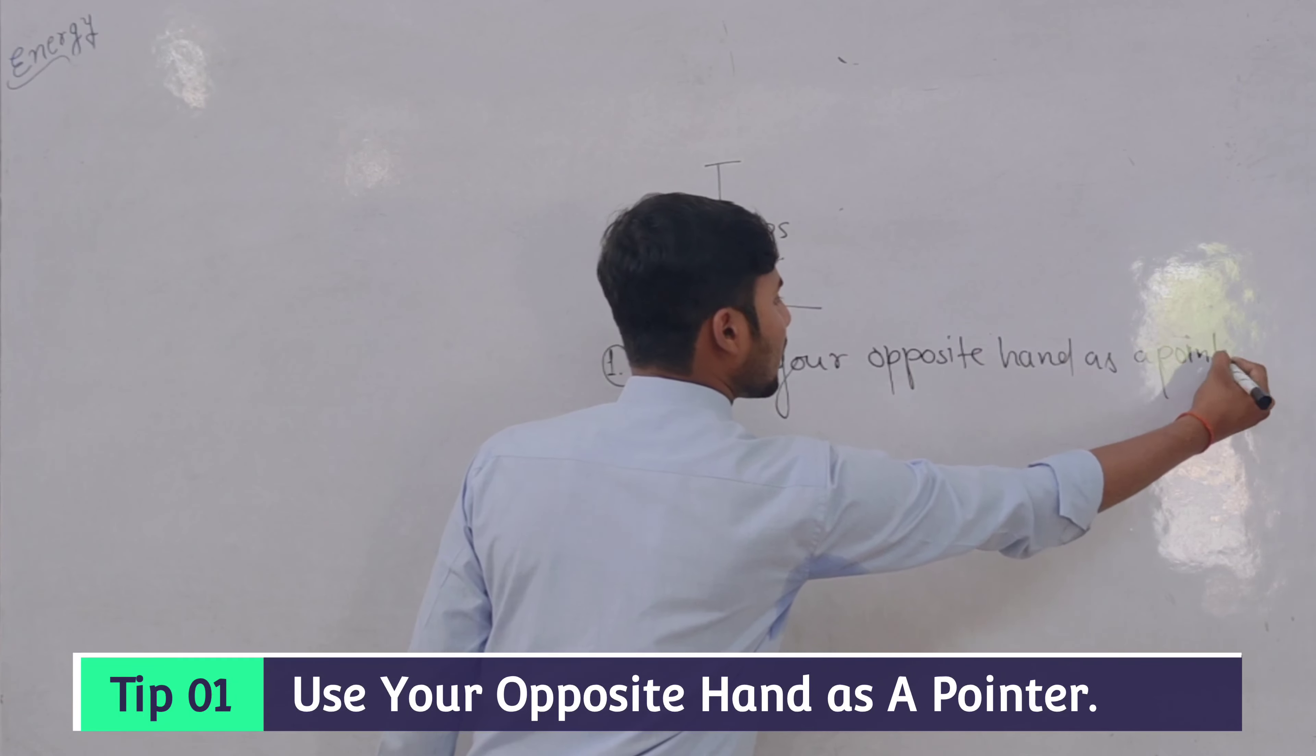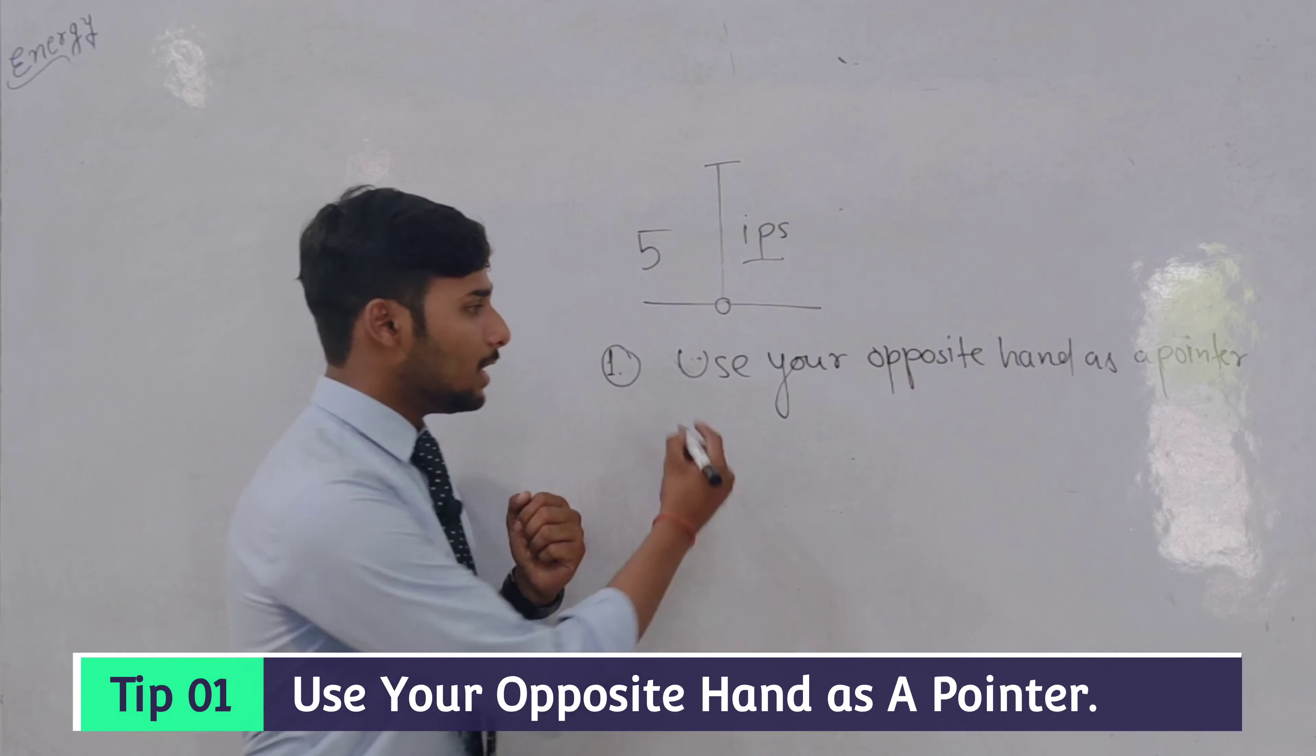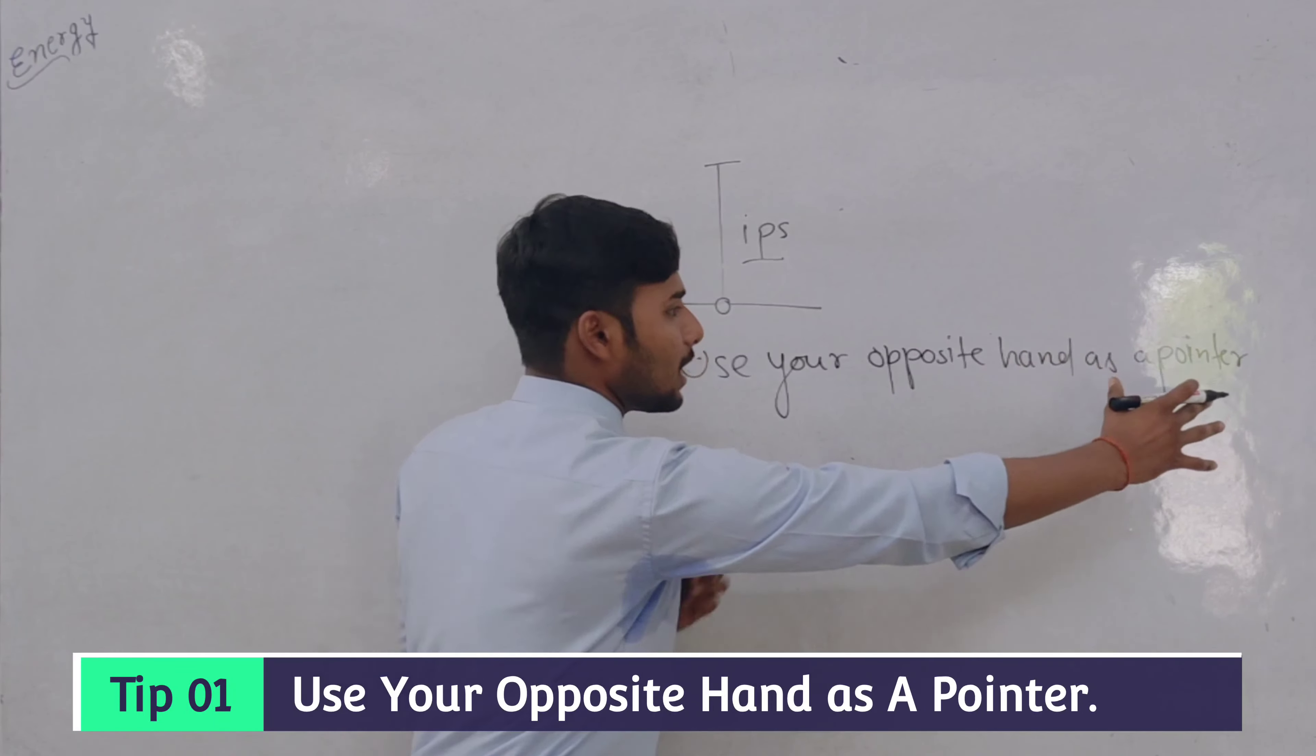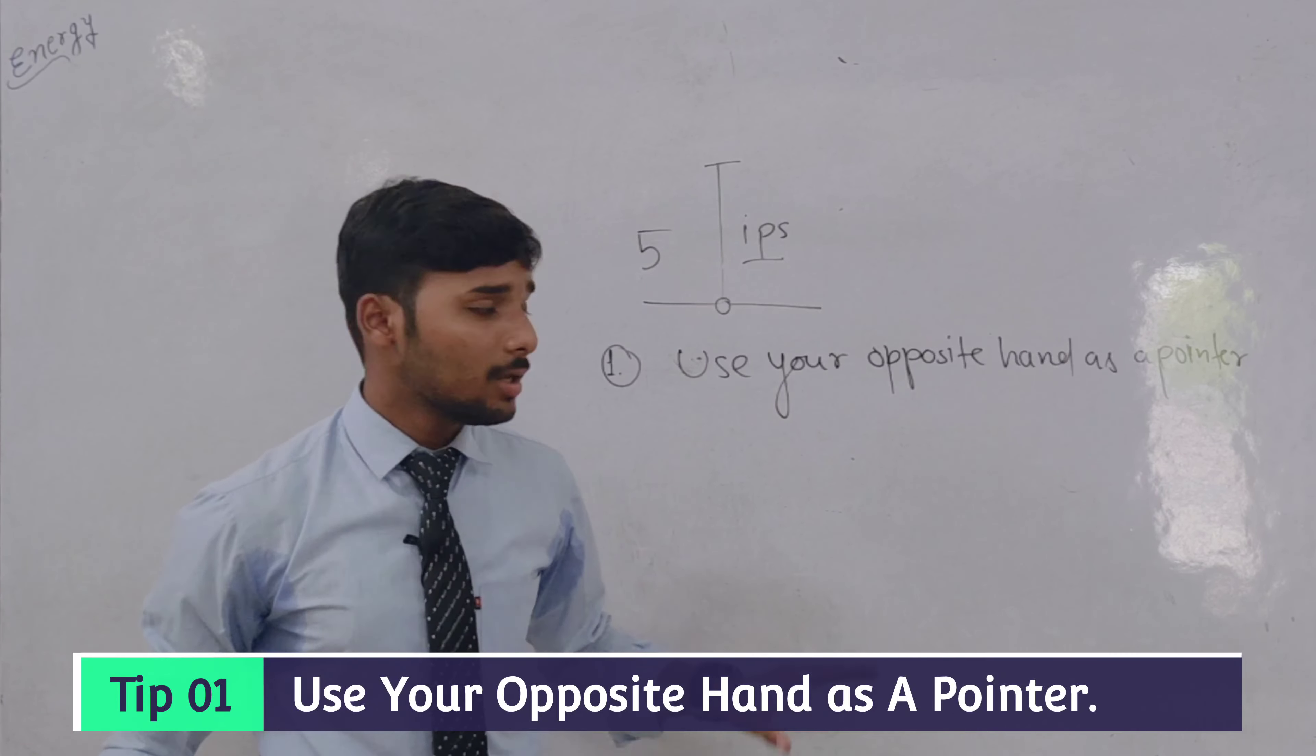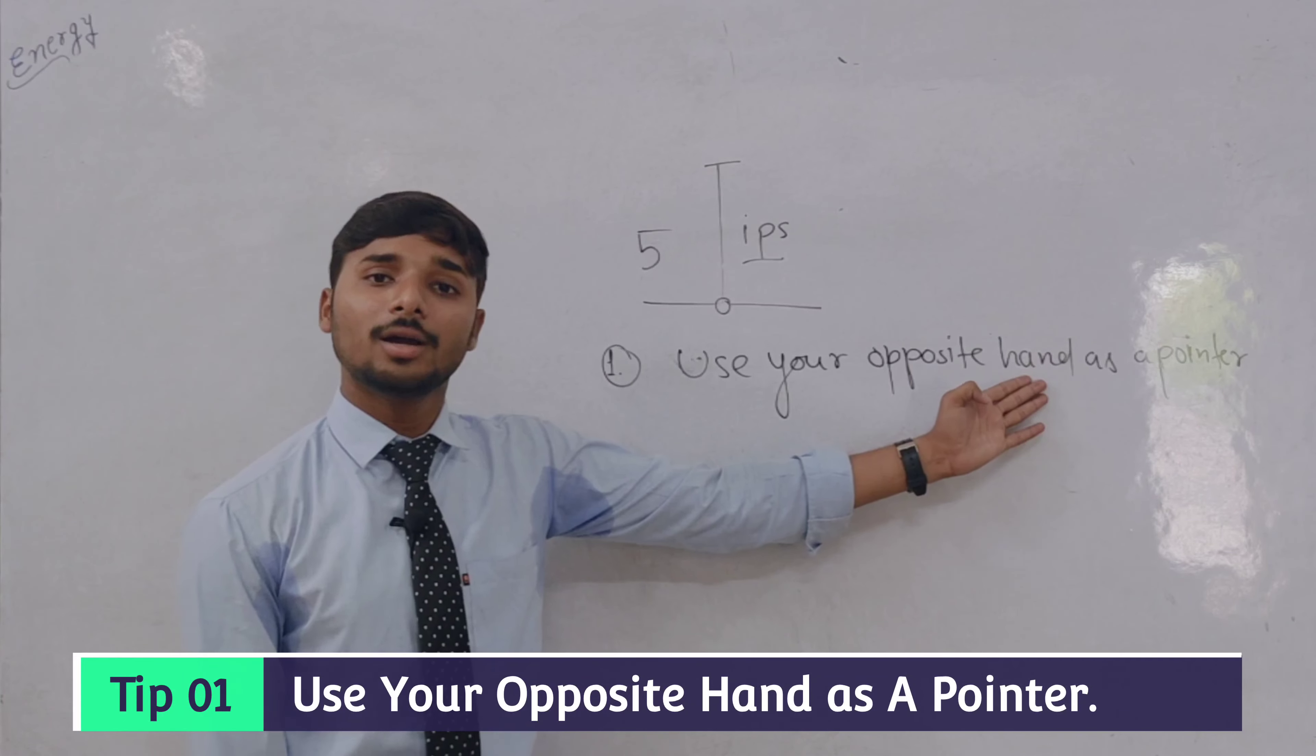You will use your opposite hand as a pointer. For example, I write using this hand, my right hand. What will happen with my left hand? It will be a pointer. Most people do wrong. They will explain it from this hand. So the eye contact breaks. Don't do that in the presentation. You will use this hand as a pointer. Now I will tell you: Use your opposite hand as a pointer. So it will be a good posture of the body.